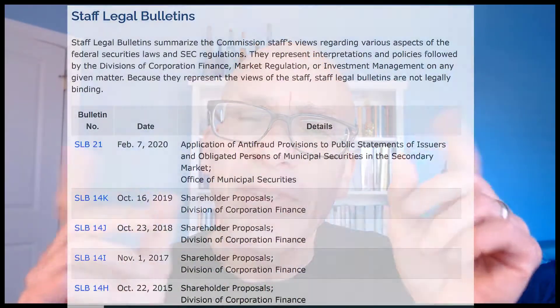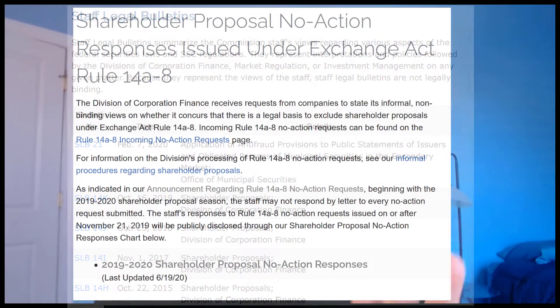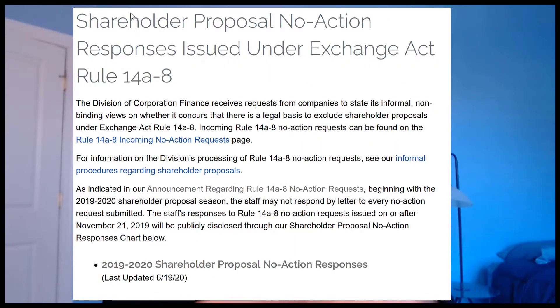You should also read all the staff legal bulletins that the Corp Fin staff has put out over the years. They really flesh out this rule in piecemeal fashion. They're on the SEC's website and typically come out annually in the fall, ever since 2001 — though sometimes they skip a year or two, depending on whether there have been developments worth updating. Then there's a final source of regulatory guidance: no-action requests and staff responses, also on the SEC's website, at least since 2007.